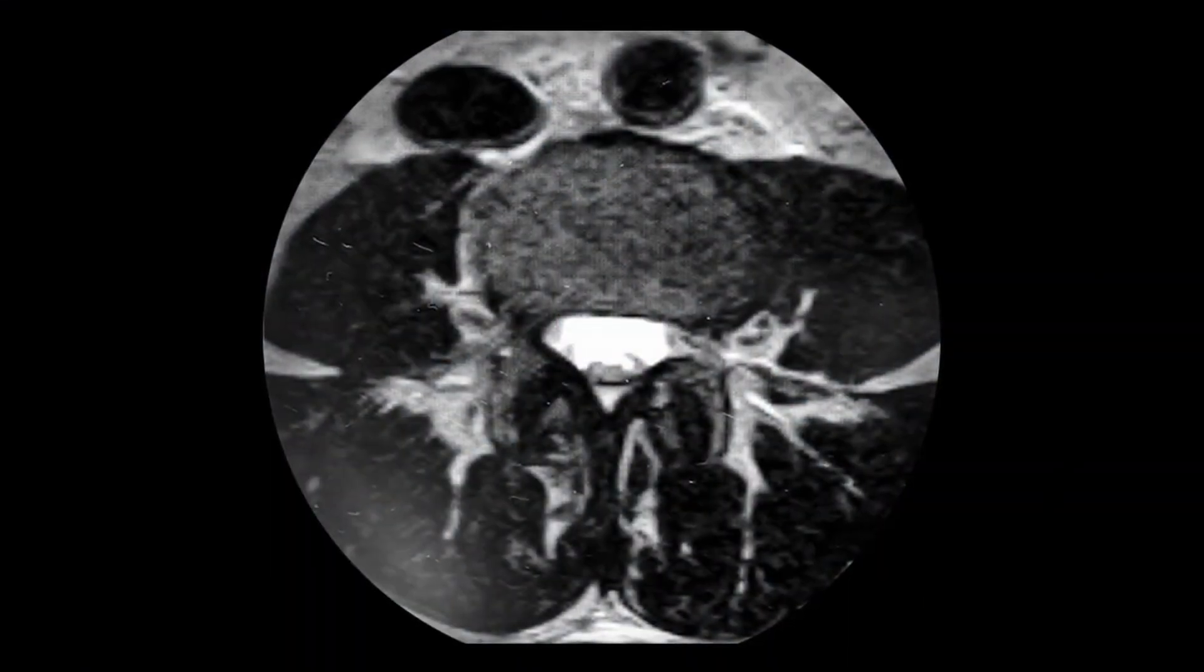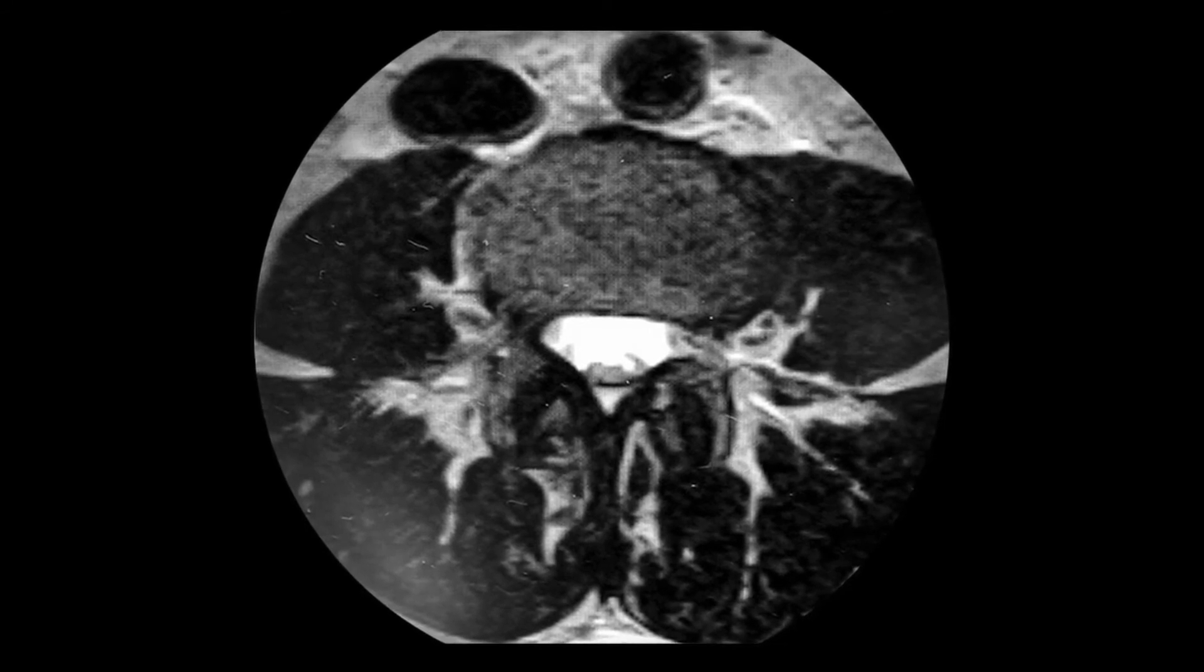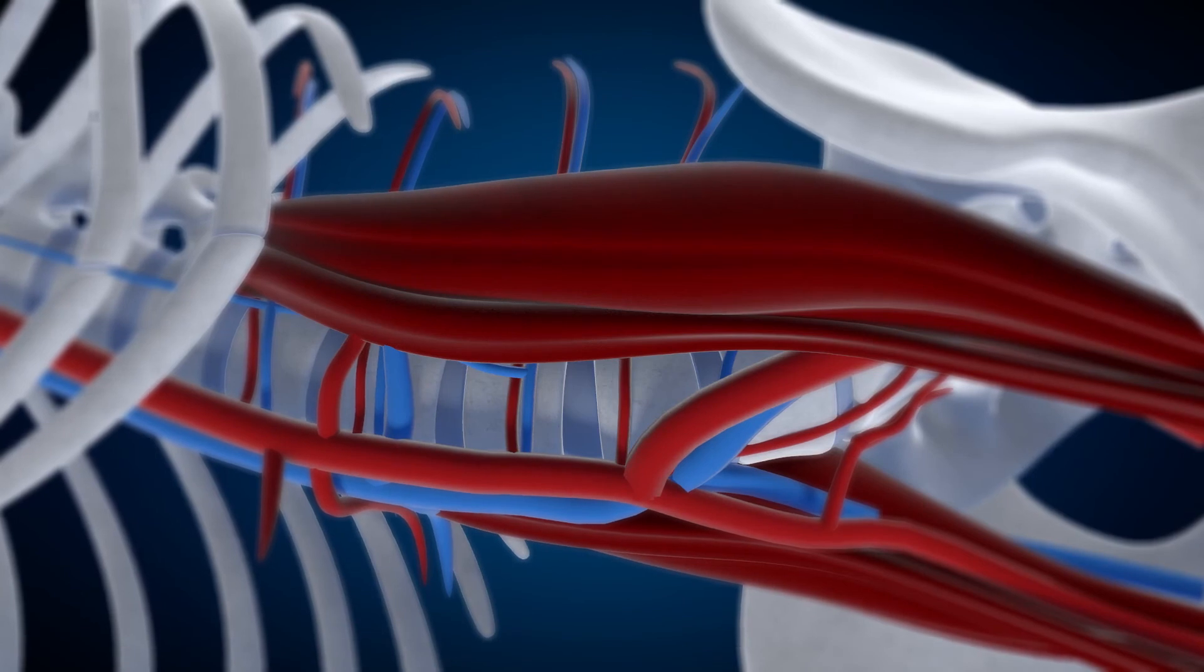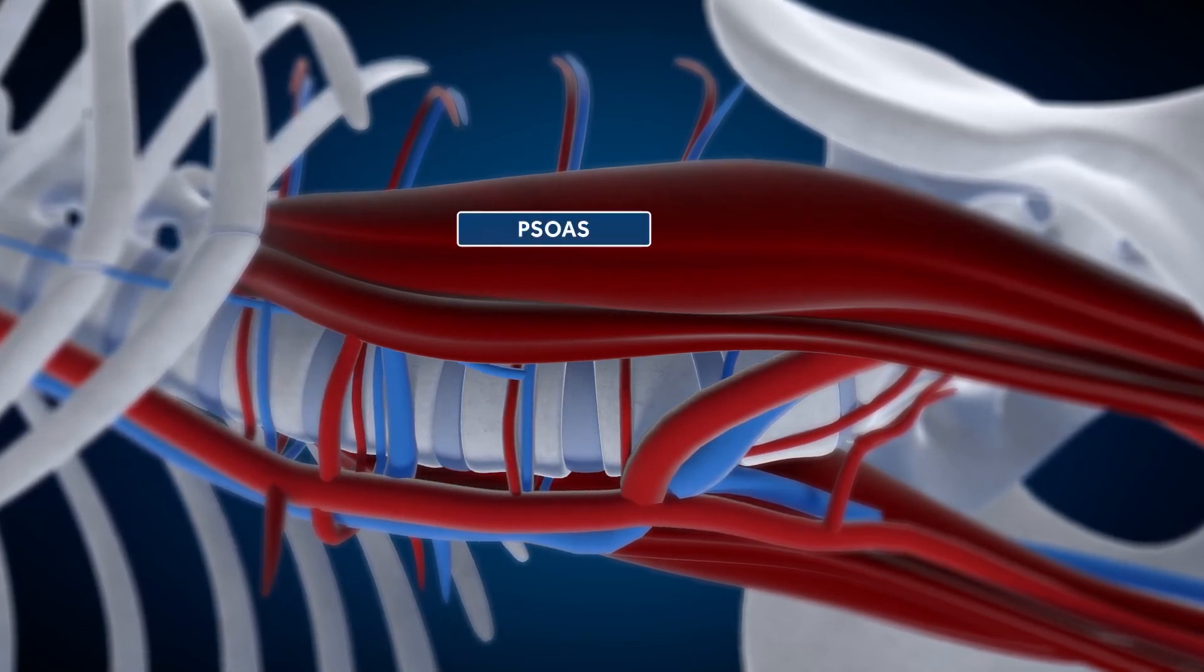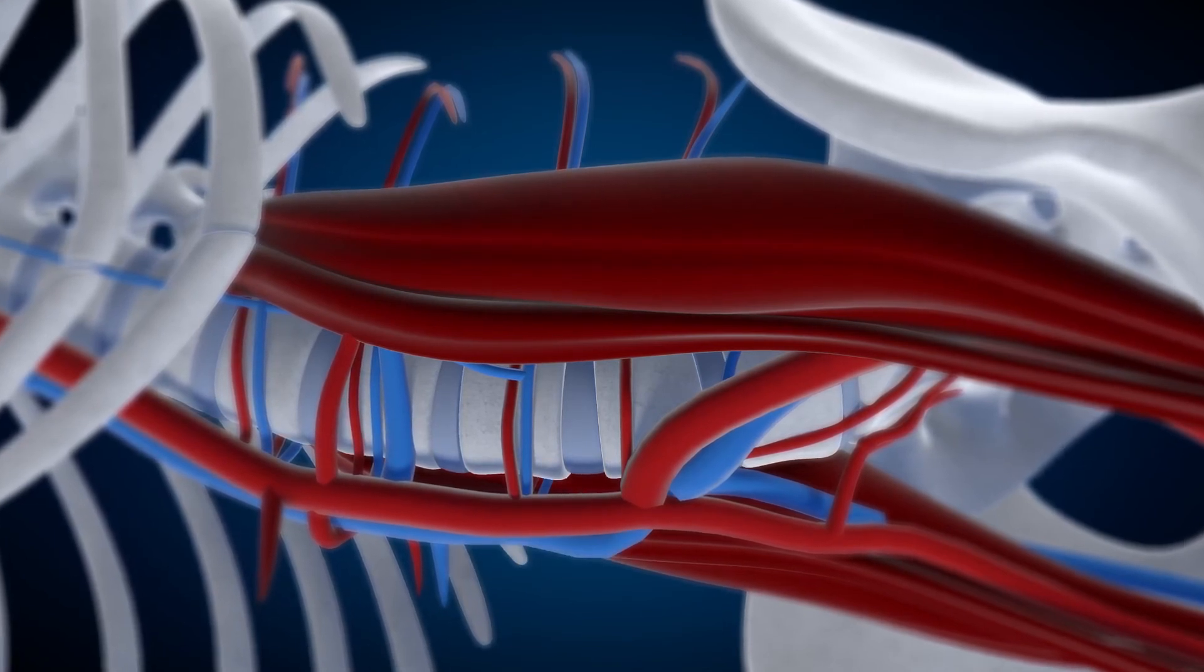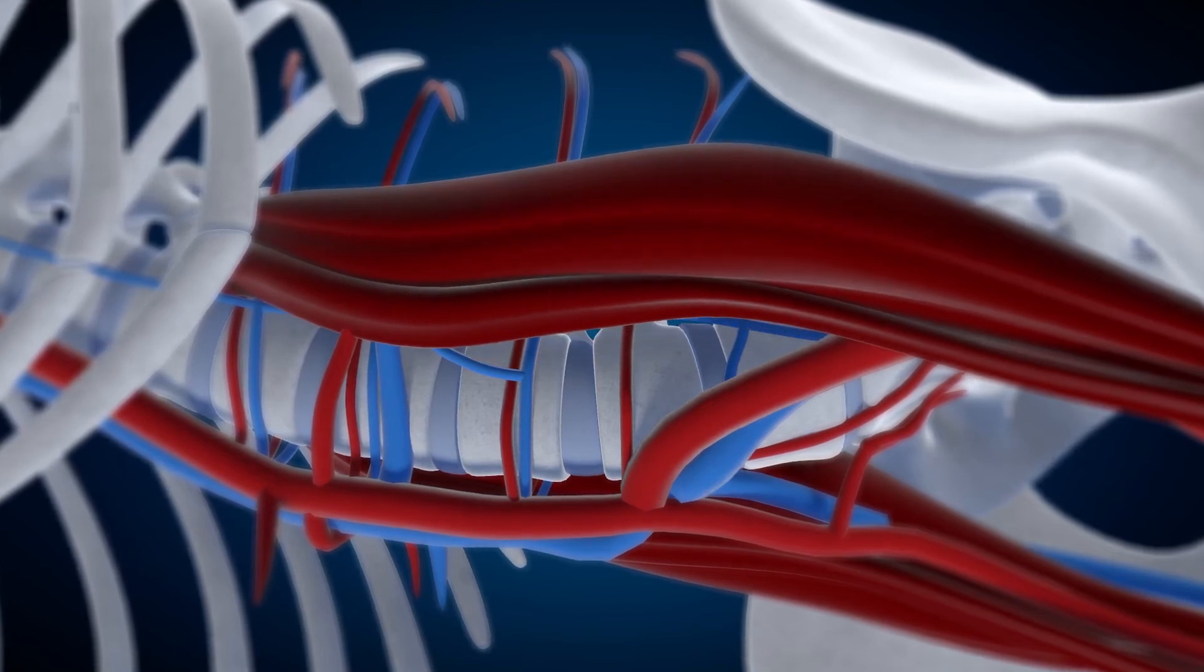In the OLIF-25 procedure, look at preoperative axial MRIs to evaluate for irregular vasculature. Positioning the patient laterally, left side up, increases the size of the corridor between the psoas and aorta as the great vessels move to the right. The preferred starting position of the probe on the disc space is anterior to the psoas and away from the major vessels.